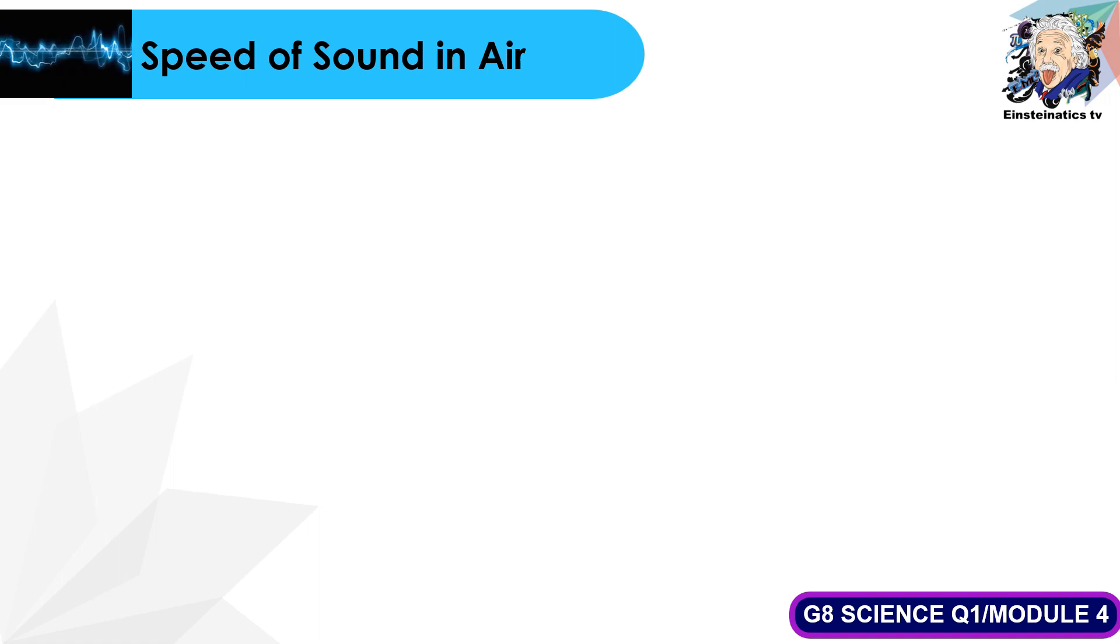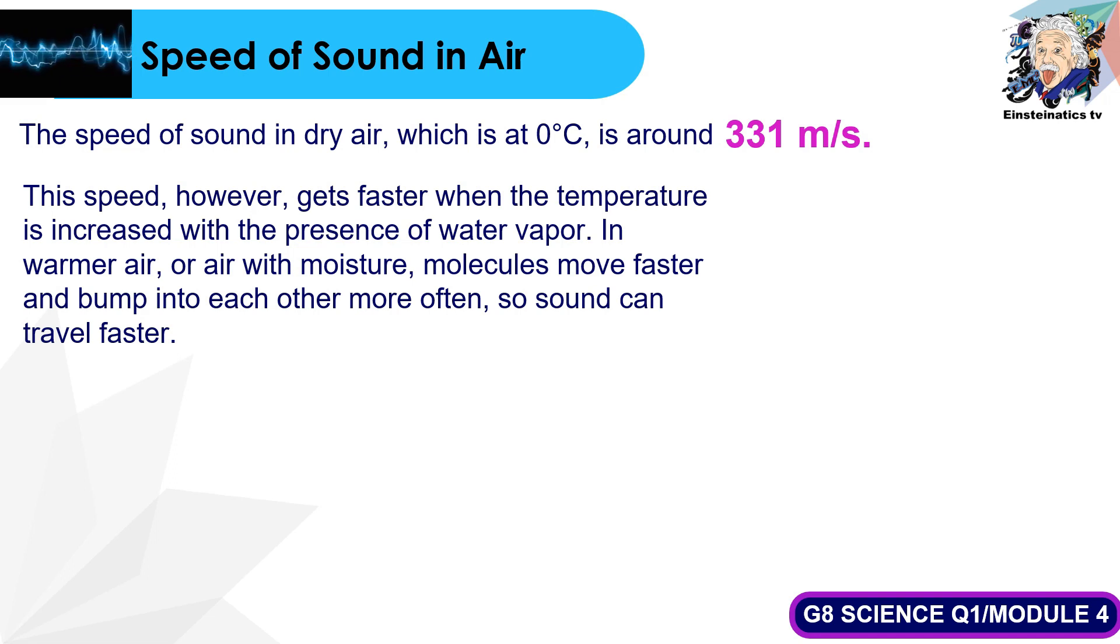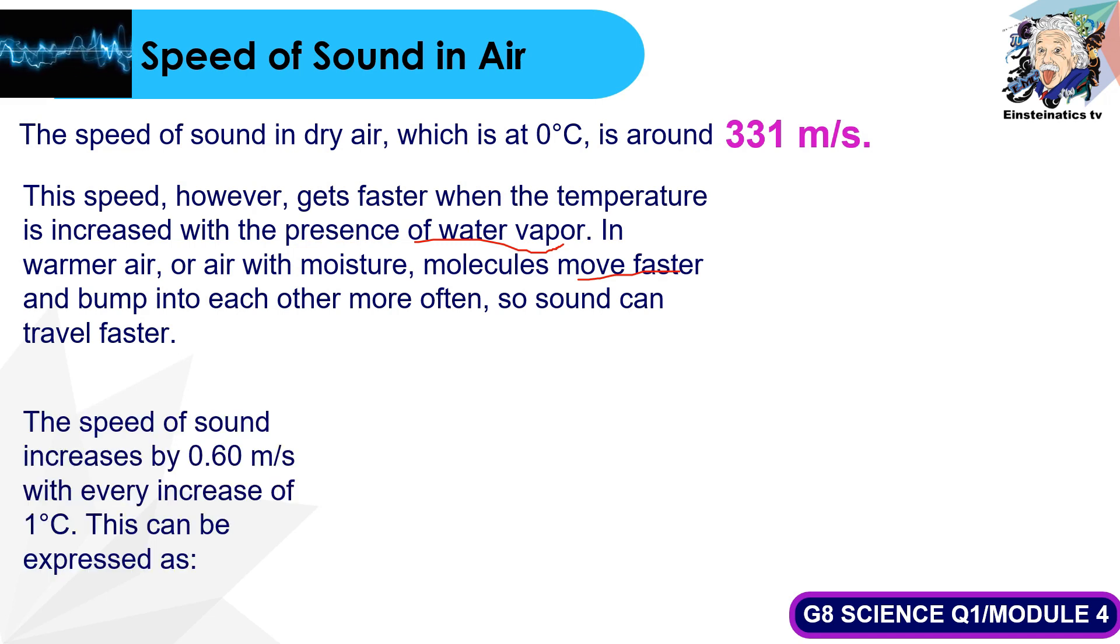We discussed that the speed of sound is affected by the type of medium it moves through, whether it is solid, liquid, or gas. Now, aside from the type of medium, speed of sound can also be affected by the temperature. The speed of sound in dry air at 0 degrees Celsius is around 331 meters per second. However, the speed gets faster when the temperature is increased because of the presence of water vapor. In warmer air or air with moisture, molecules move faster and bump into each other more often, so sound can travel faster. The speed of sound increases by 0.60 meters per second with every increase of 1 degree Celsius. This can be expressed as: speed equals 331 meters per second plus 0.6 meters per second over degree Celsius times temperature.